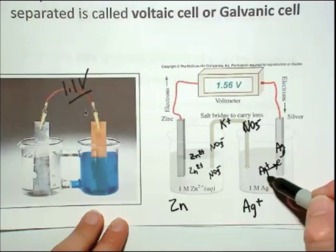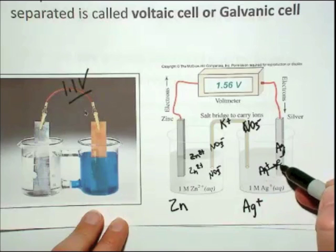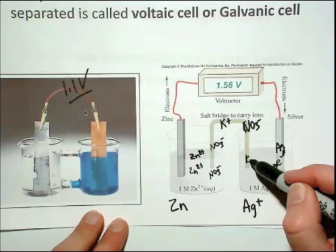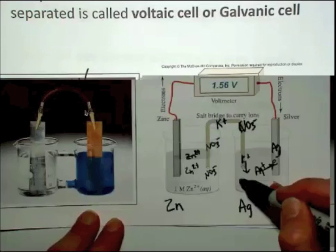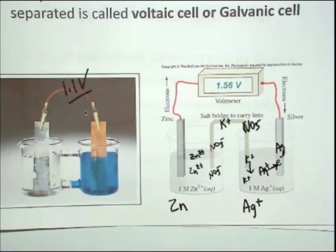And on this side, the silver ion is what we call plating out. So, this side is losing positive charge. So, potassium ions will migrate down into this side to keep it electrically balanced.